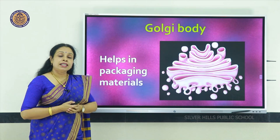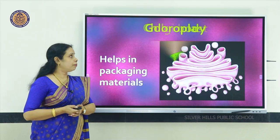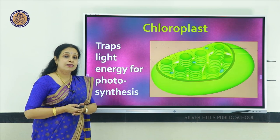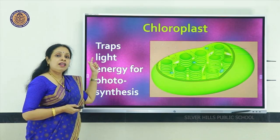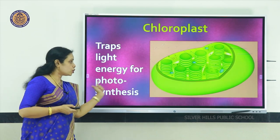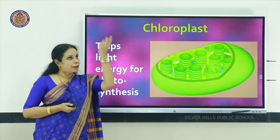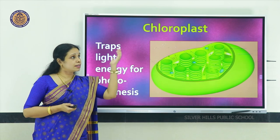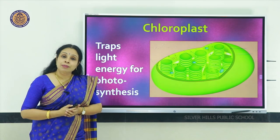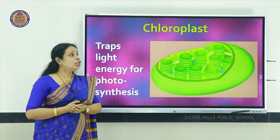The Golgi body is another organelle that helps in packaging of materials and moving materials around in the cell. Plant cells have another organelle called chloroplast — the green plastid. It contains a green pigment called chlorophyll which traps light energy during photosynthesis. Photosynthesis is the method by which plants prepare food: they trap light energy and combine carbon dioxide from the air with water from the soil to form sugar. The light energy needed is trapped by the chloroplast.